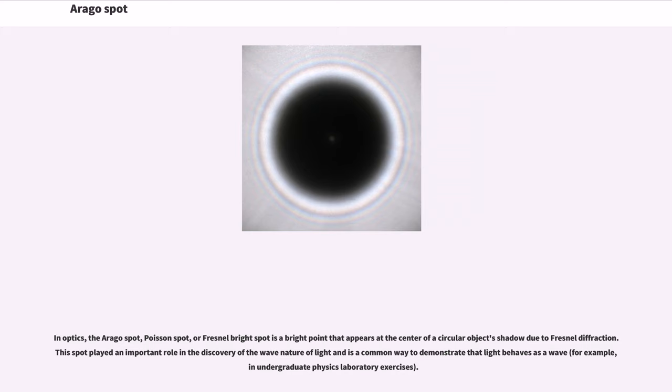In optics, the Arago spot, Poisson spot, or Fresnel bright spot is a bright point that appears at the center of a circular object's shadow due to Fresnel diffraction. This spot played an important role in the discovery of the wave nature of light and is a common way to demonstrate that light behaves as a wave.